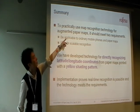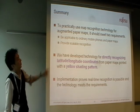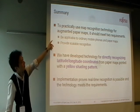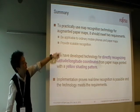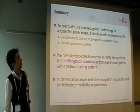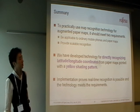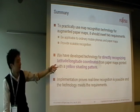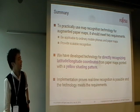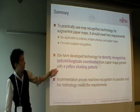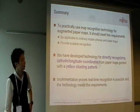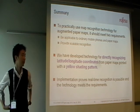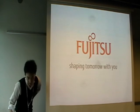To practically use map recognition technology for augmented paper maps, the system should meet key requirements: it must be applicable to ordinary mobile phones and paper maps, and provide scalable recognition. We have developed a technology for directly recognizing latitude and longitude coordinates from paper maps printed with yellow shading patterns. The implementation provides real-time recognition, and the technology meets all the stated requirements. Thank you very much.